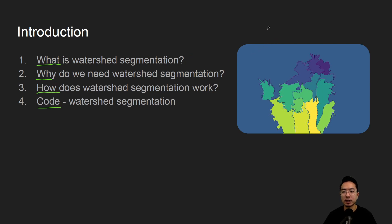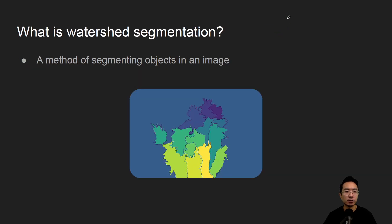So by the end of this video, we'll see how we could get this image here on the right. So what is watershed segmentation? It's a method of segmenting objects in an image, and especially for special cases as we'll see later, where these objects are touching.